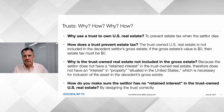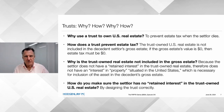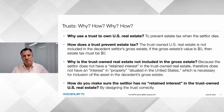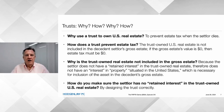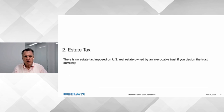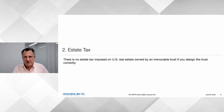In a trust, at first blush the settlor doesn't own the asset. But there's a thing in the estate tax code called retained interests — sections 2036, 2037, 2038. If you draft the trust wrong, the settlor has a retained interest in the property and therefore there's estate tax. How do you prevent this retained interest? By drafting the trust document correctly. So this irrevocable trust is the firewall against estate tax if the settlor dies.